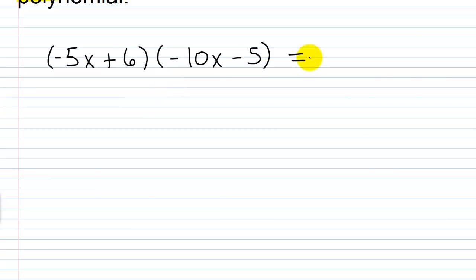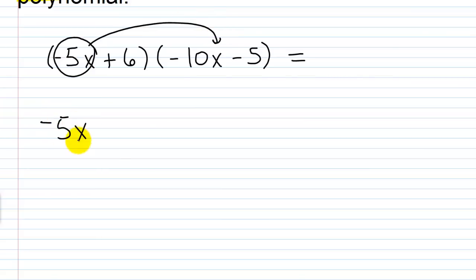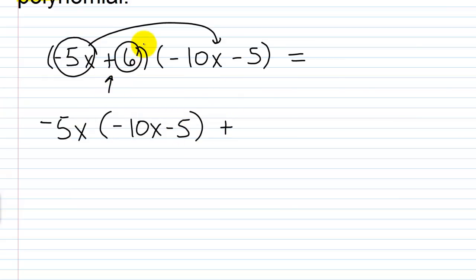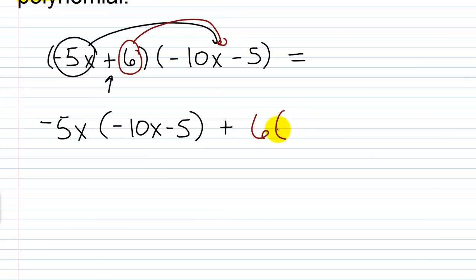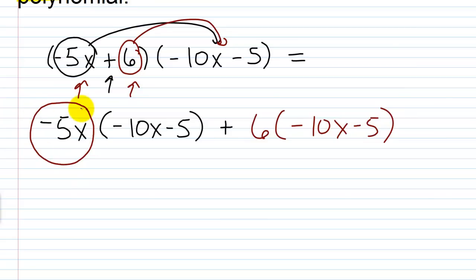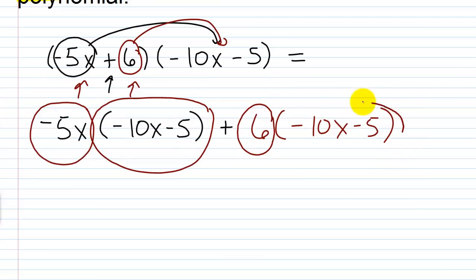For right now, I'm going to take the first term and multiply it by the second polynomial. So write this as negative 5x times negative 10x minus 5. Then I'll take the second term from this polynomial and multiply it by the second polynomial, so plus 6 times negative 10x minus 5. We want to take each term from the first polynomial — negative 5x and 6 — and multiply by each term of the second polynomial.